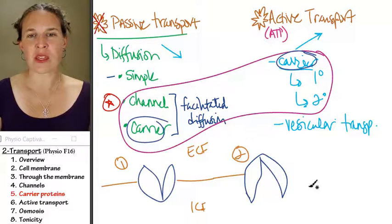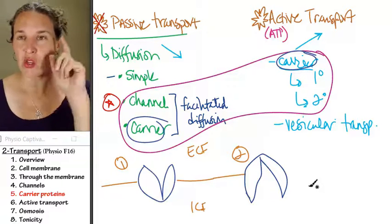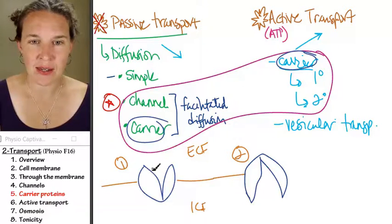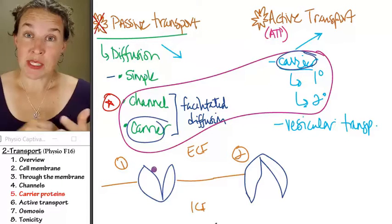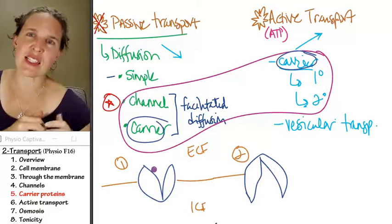And now the carrier is open to the intracellular fluid. You can imagine that if I had a substance like this substance right here, it's actually the binding of the substance to the carrier protein that initiates the shape change.